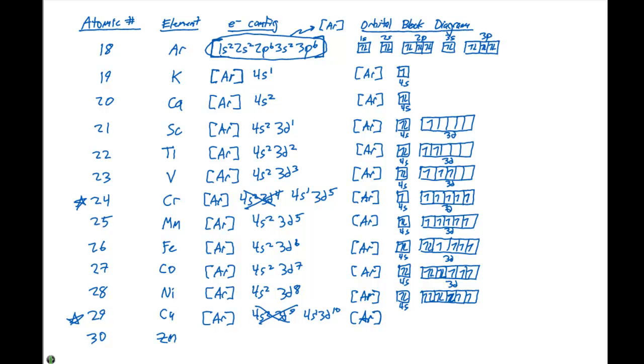So, when we draw this electron block diagram, we do not fill in the s orbital with that second electron. Instead, we put all ten electrons in the d orbitals. So, our 3d shell is completely filled.